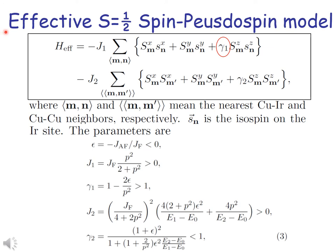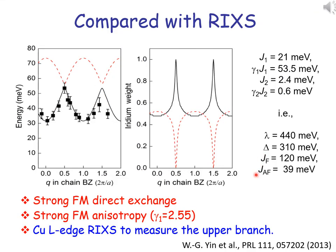After projecting out the J=3/2 states on the iridium side, we obtain the low-energy pseudo-spin Hamiltonian. The parameter γ₁ denotes the degree of anisotropy. We calculated the magnon dispersion of this Hamiltonian and compared the result with experiment. We found the value of γ₁ is about 2.6, indicating a rather strong anisotropy.